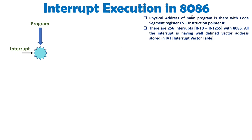So what does 8086 have to do? It will take the address from the interrupt vector table (IVT) and execute whatever program is at that address. But it is not that simple — there are a few more basic things we need to understand.